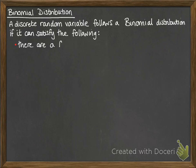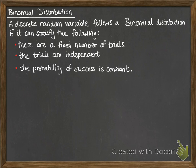So if these four conditions are met, then we know it can follow a binomial distribution. Firstly, there are a fixed number of trials. The trials are independent of each other, so the outcome of one doesn't affect the outcome of the other. The probability of success is constant. And there are two outcomes which can be classed as success or failure.